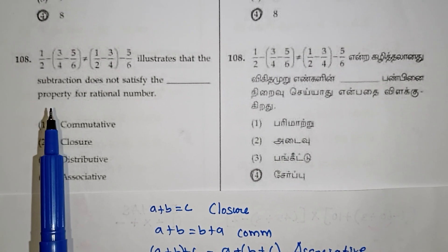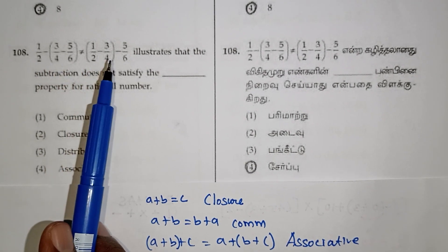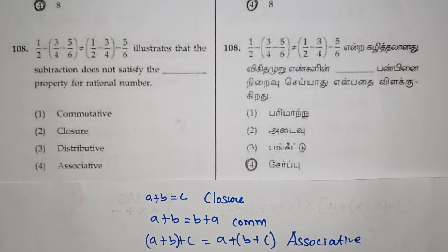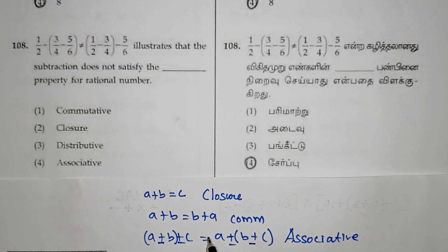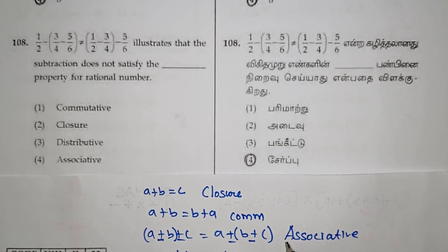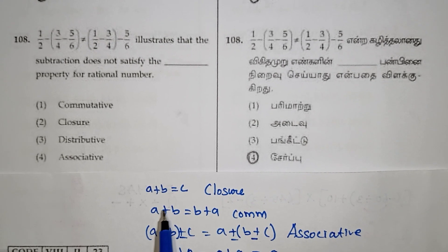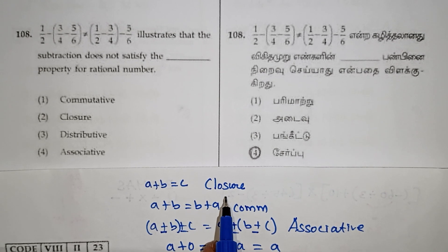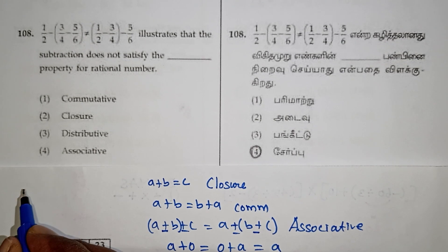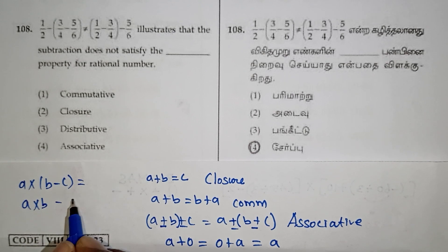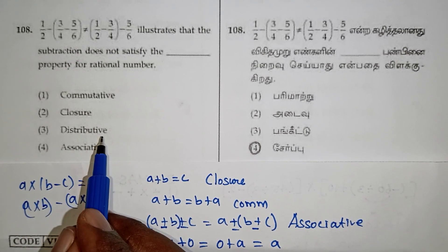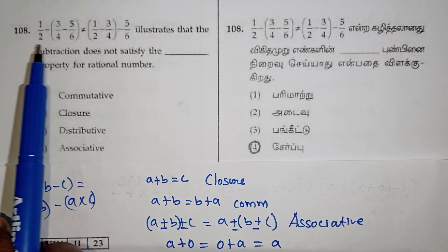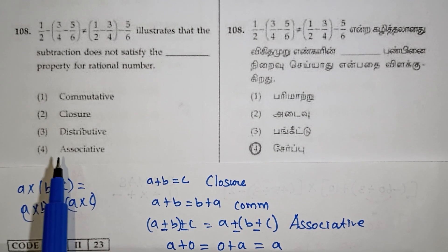Next question asks about which property subtraction does not satisfy. This involves 3 variables, so it is the associative property. For subtraction, a minus b minus c does not equal a minus (b minus c), so subtraction does not satisfy the associative property. The associative property uses 3 variables; commutative uses 2; closure means the result stays in the set; distributive uses 2 different operations, such as a times (b minus c) equals a times b minus a times c. So the 4th option is correct.